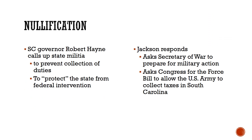In order to prevent the collection of taxes, South Carolina Governor Robert Hayne is going to call up the state militia — armed men who are going to actively prevent the collection of taxes in the state. From the South Carolina perspective, they see this as necessary to protect themselves and their authority. It's almost as if South Carolina is still thinking in terms of the Articles of Confederation, where the states had the power, rather than the Constitution that we're living under in the 1820s and 1830s.